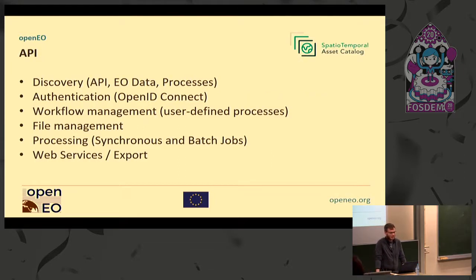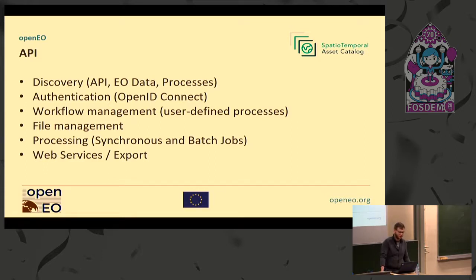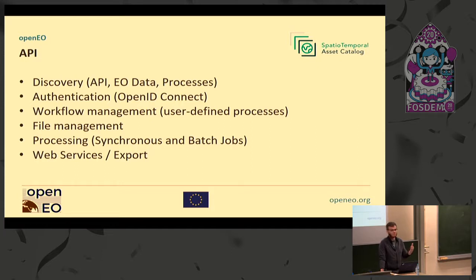The API — the translation layer in between — offers the following functionalities. First, it needs to give you basic information, giving access to discovery things like how the API works, what it supports, the EO data that you can use in these workflows, which is exposed via STAC collections and the STAC API, and then the processes, which is basically just a list of processes supported by the backend.